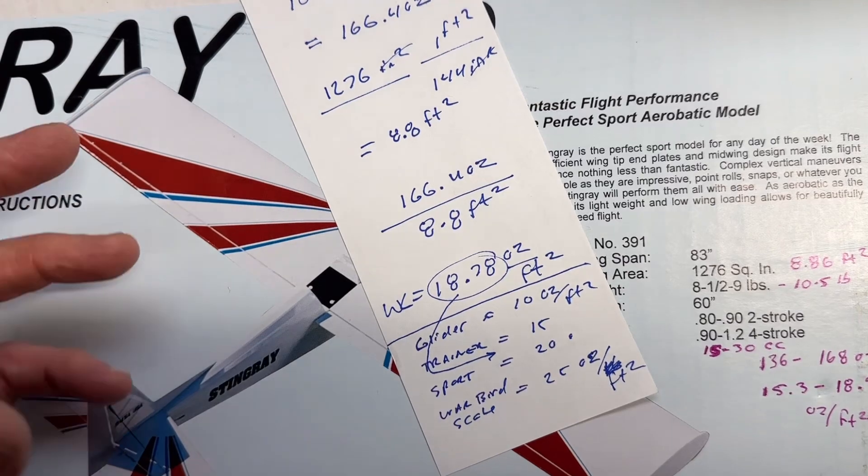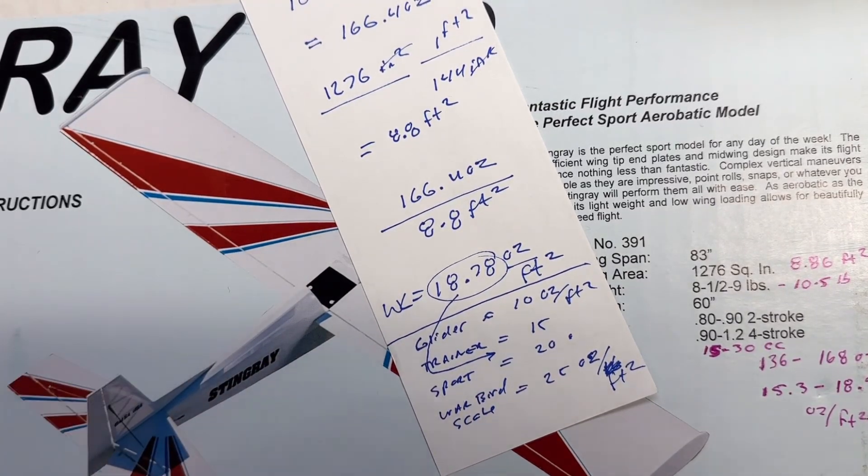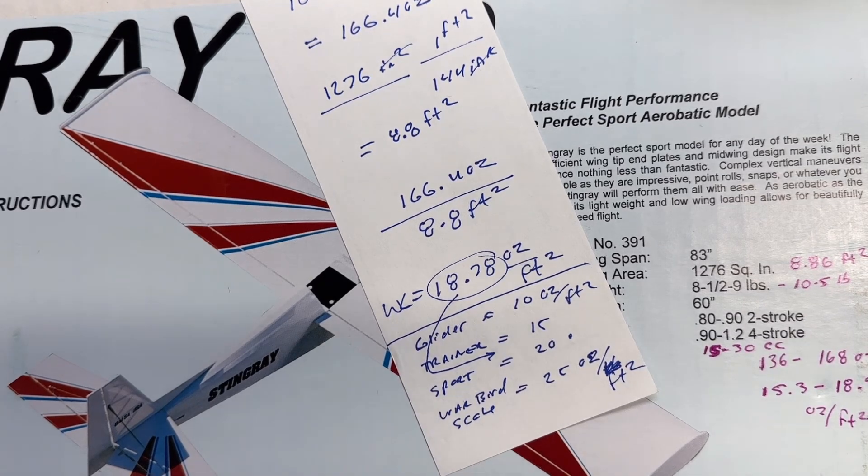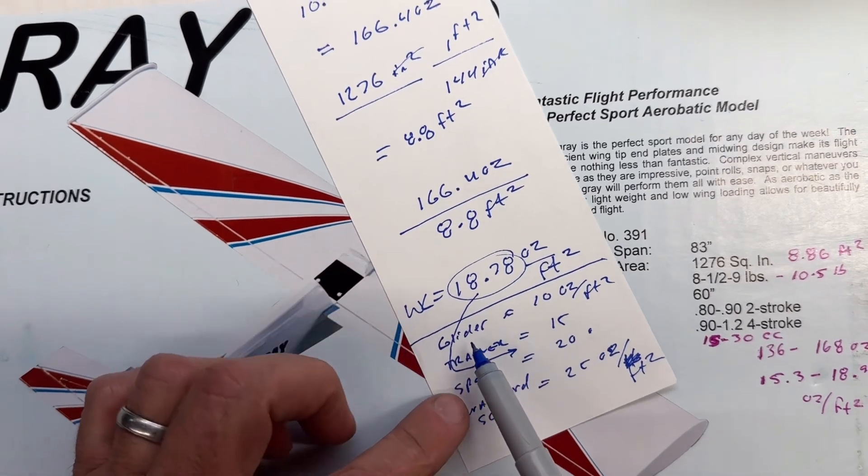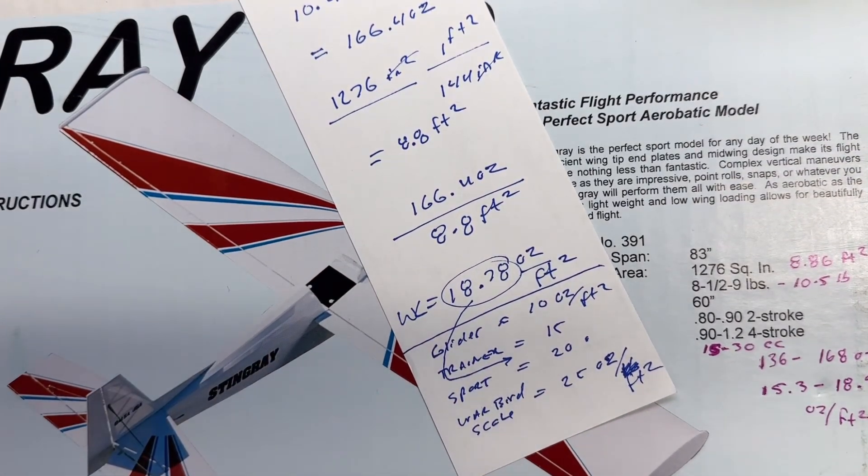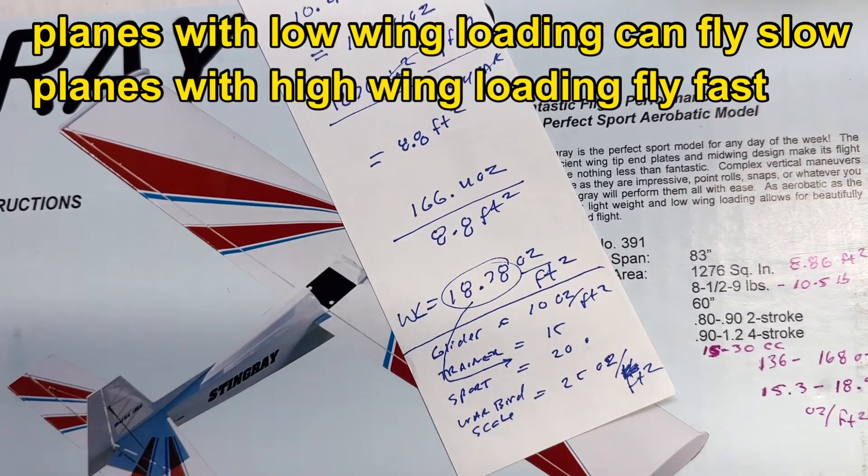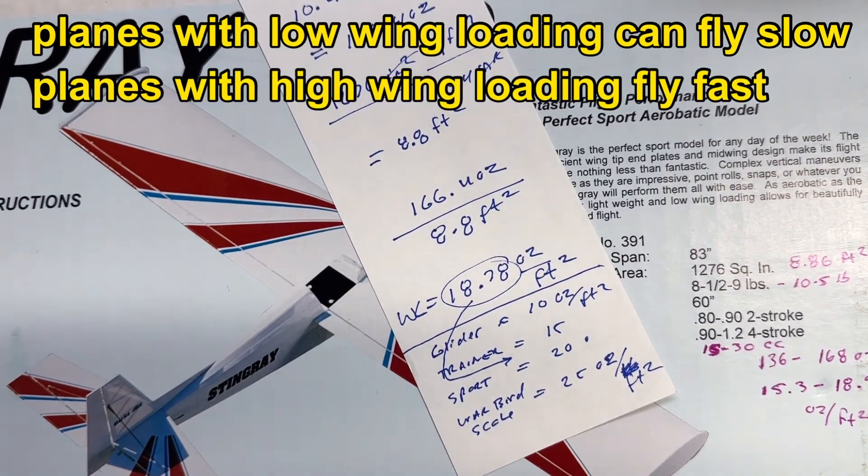All right. And just a quick word about wing loading. Wing loading is just sort of the way I look at it. And I'm no expert. The way I look at it, the wing loading is just a number for looking at a plane to kind of get a feel for how that plane is going to fly and how that plane is going to behave. So obviously you have something like a glider, which has a pretty large wing area for its weight. So that wing loading is very low. So that plane is going to fly slow.